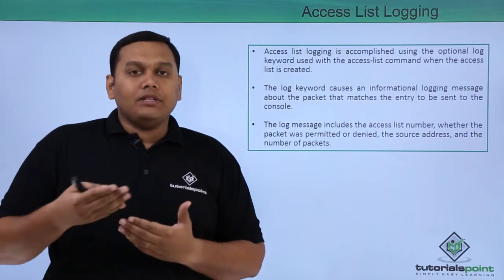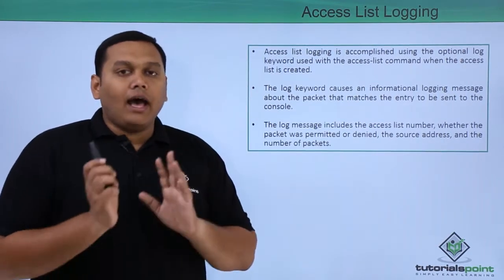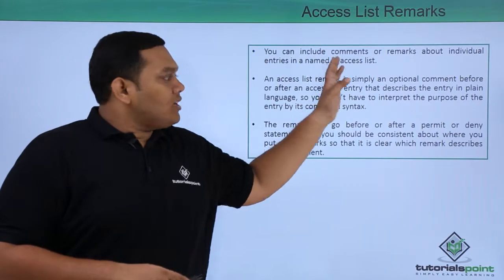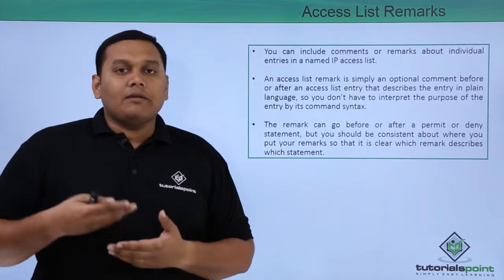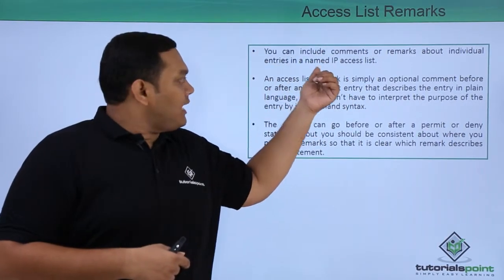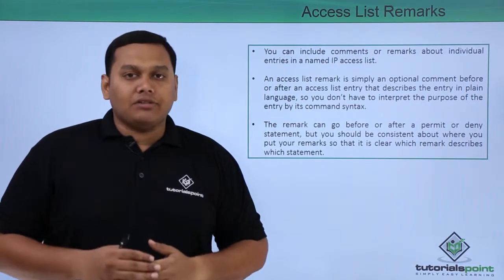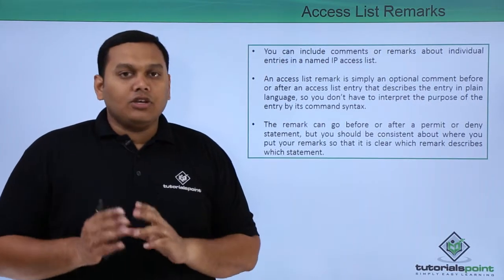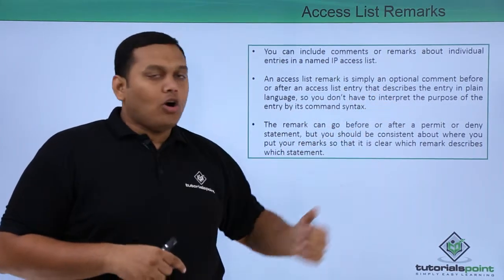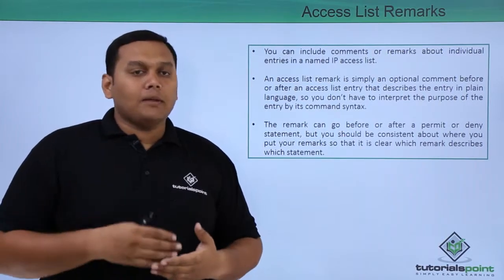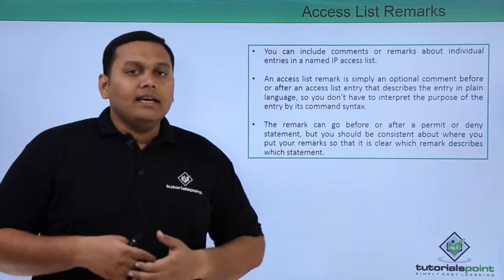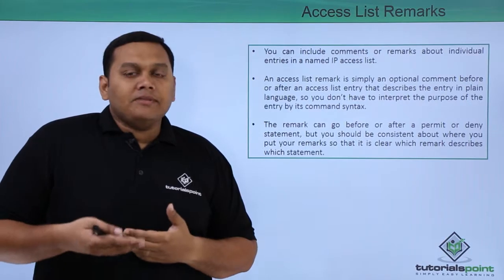Coming to access list remarks, you can include comments or remarks about the access list and individual entries, including named IP addresses. The access list remark is simply an optional comment before the permit or deny entry that describes the entry in plain text format.